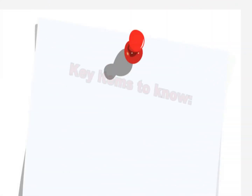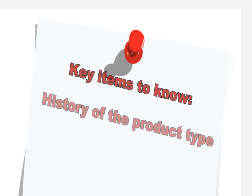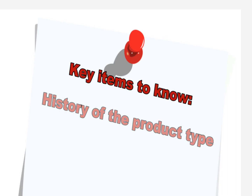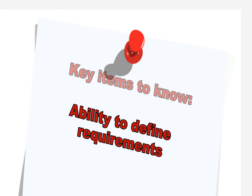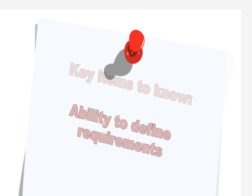A list of key items to know about the product include: first, product formulation; secondly, the history of association of any illnesses, outbreaks, or potential microbial growth within the product type; and third, the ability to define requirements, procedures, and limits for safety and quality criteria through HACCP and quality plans.